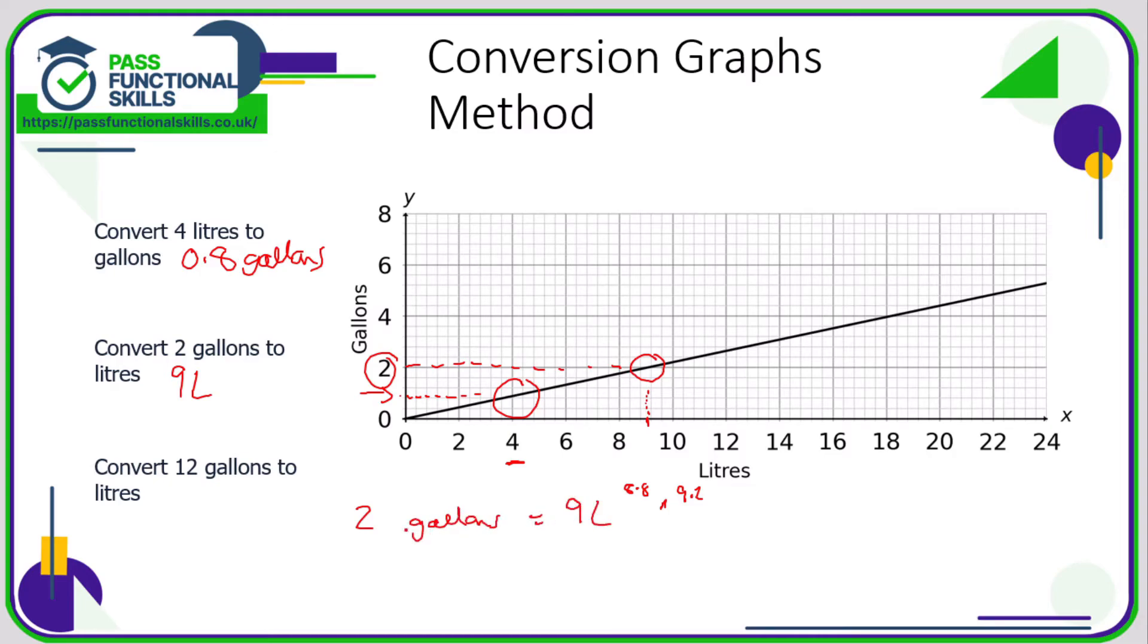So if two gallons is nine liters, then we can work out what 12 gallons is, because 12 gallons is six times more than two gallons. Therefore, the corresponding volume in liters is going to be nine liters multiplied by six, which is 54.